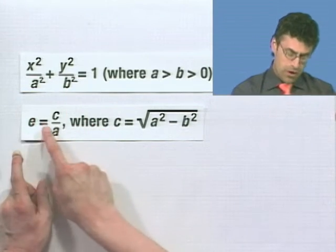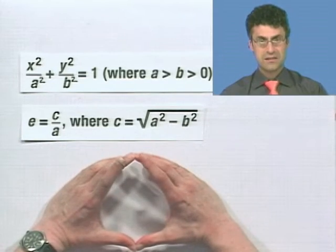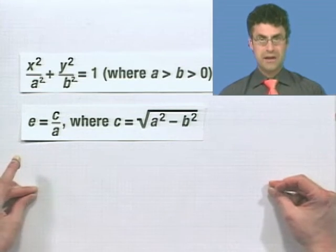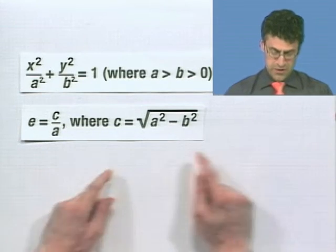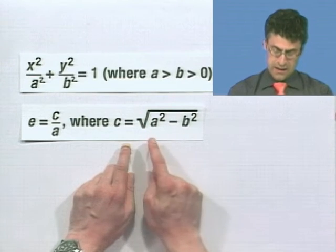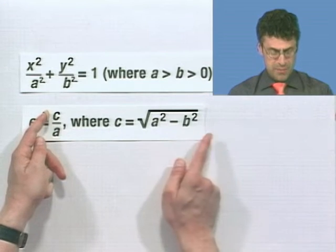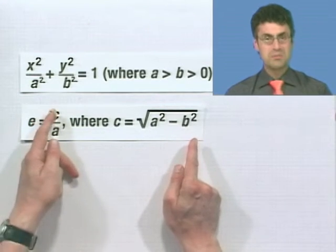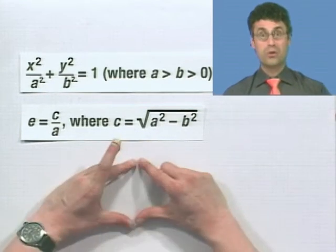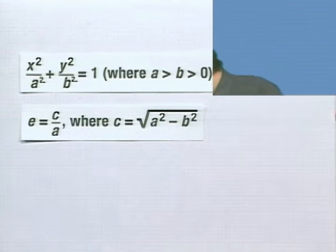So the smaller the value e is, the more round and circular-like it is. And the larger e is, the more extreme it's going to be. What's the biggest that e could be? Well, c is always going to be less than a. So I always have a number that's smaller than the denominator in the numerator, which means this number can never actually get up to 1. So the closer it is to 1, the more exaggerated. The closer it is to 0, the more round.